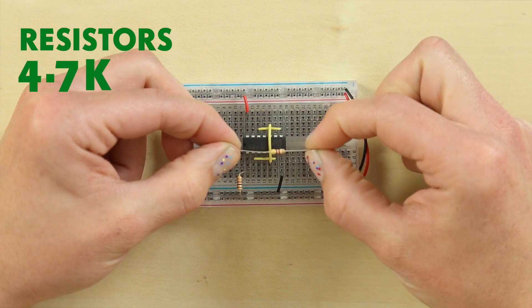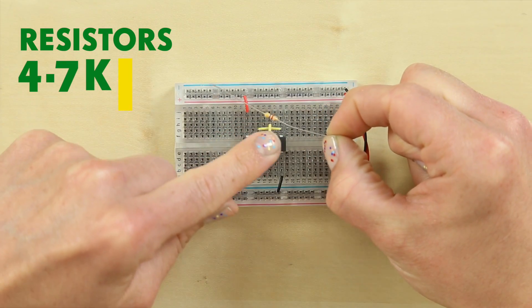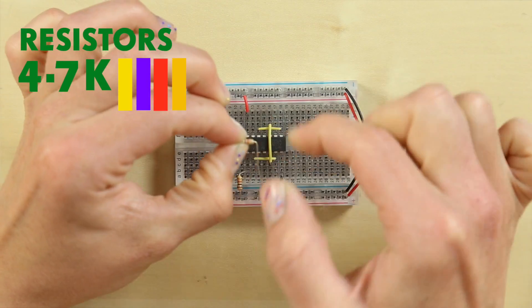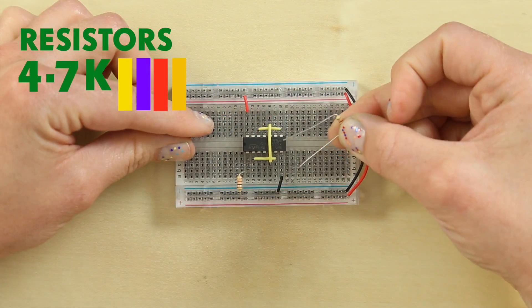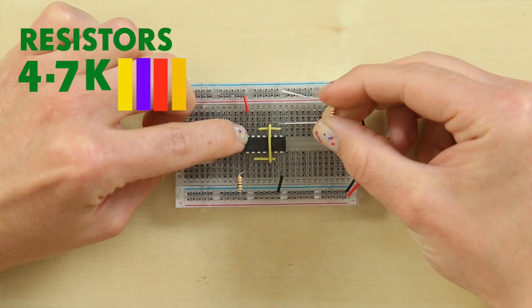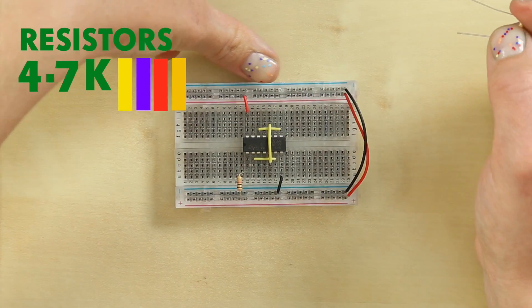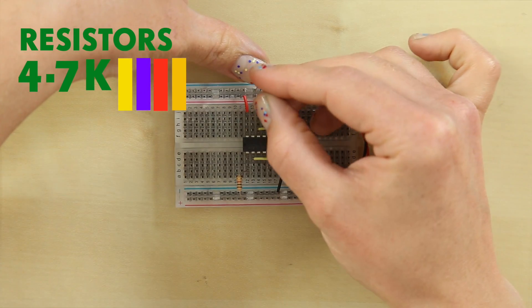Then take your 4.7k resistor. This is marked yellow, purple, red, gold. The bands on your resistors let you know the resistance. This one you'll want to connect to pin 13 of your IC chip. So go from your center block from your positive into the board.